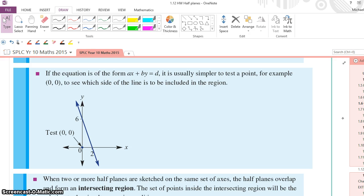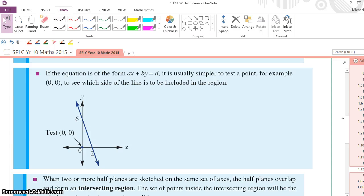And generally, it's easiest, as you can see in the example here, to test the origin, 0, 0. That's the fastest way to see if you have the correct point.